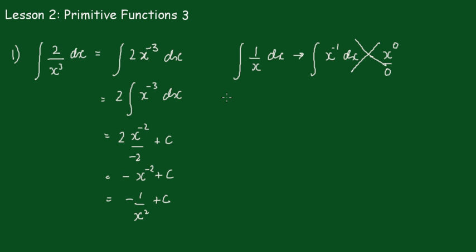In number 2, I've got x cubed plus 1 on x squared dx. We can rewrite that in index form as x cubed plus x to the minus 2 dx.